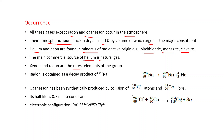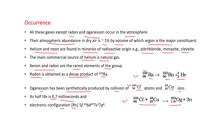The main commercial source of helium is natural gas. Xenon and radon are the rarest elements of the group. Radon is obtained as a decay product of radium-226 — radium-226 emits an alpha particle (helium) and converts into radon. Oganesson has been synthetically produced by collision of californium-249 atoms and calcium ions. Its half-life is only 0.7 milliseconds and its electronic configuration is [Rn] 5f14 6d10 7s2 7p6.